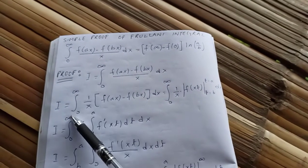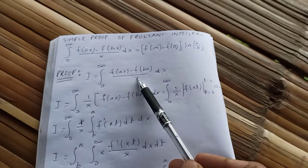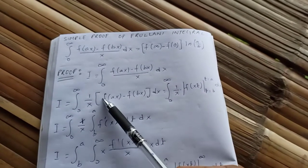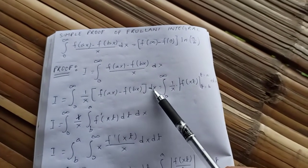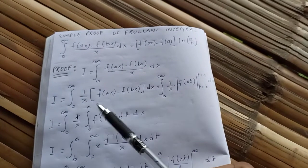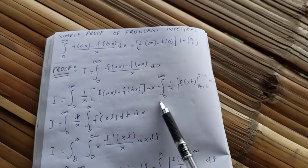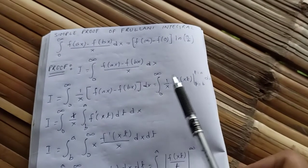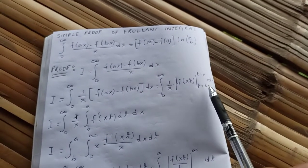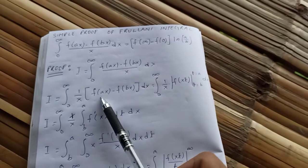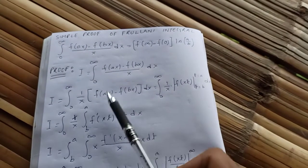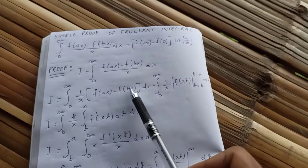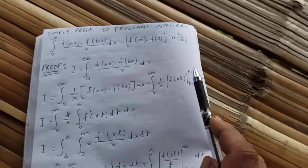We write 1/x times [f(ax) - f(bx)] dx. Now, f(ax) - f(bx) can be expressed as the integral from b to a of f'(xt) dt, where t goes from b to a.